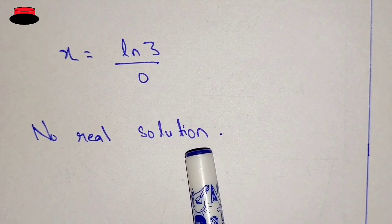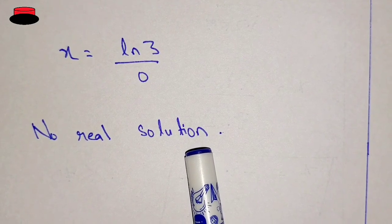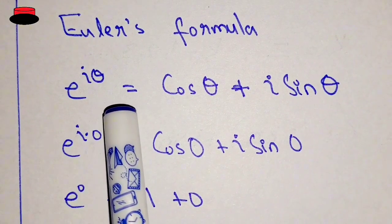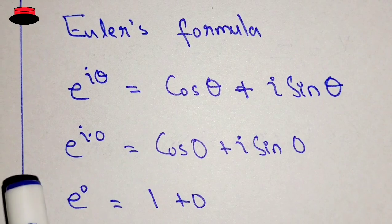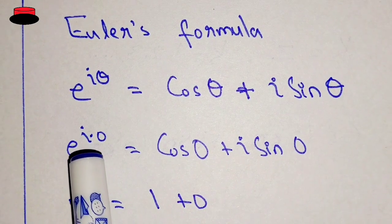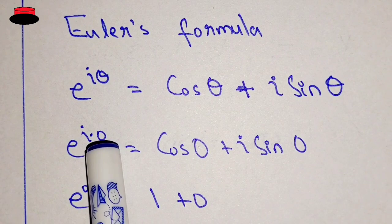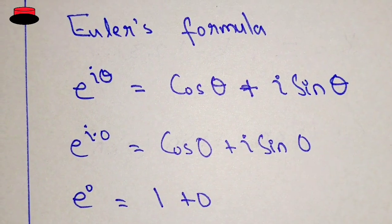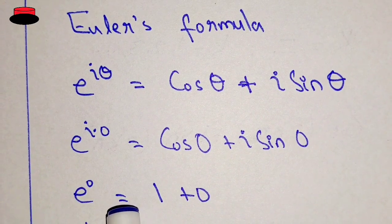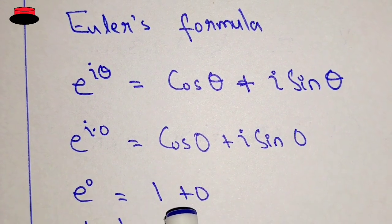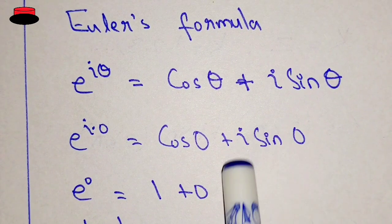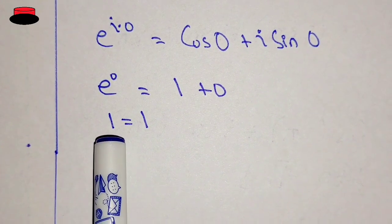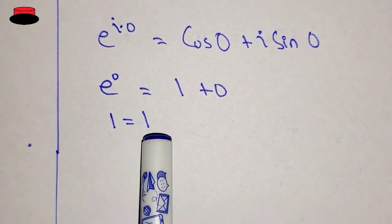Euler's formula says e^(iθ) equal to cos(θ) plus i·sin(θ). So e^(i·0), putting 0 in place of θ, equals cos(0) plus i·sin(0). This gives e^0 equal to 1 plus 0, which is 1. We know that e^0 is 1, so both sides are equal.